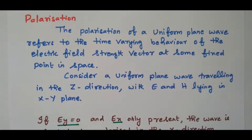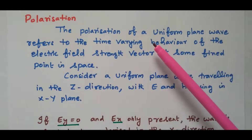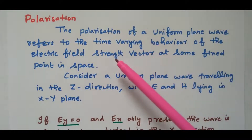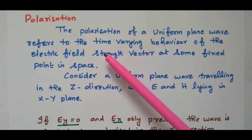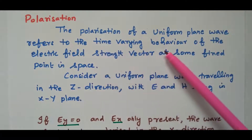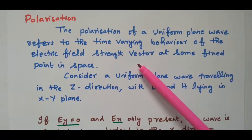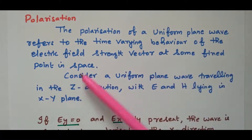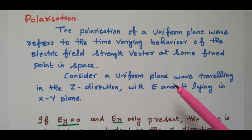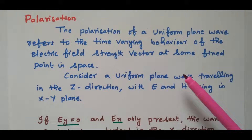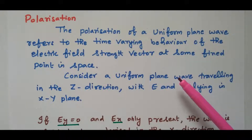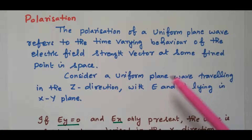Welcome viewers. In this video we will see the polarization. The polarization is nothing but the uniform plane wave. The polarization of the uniform plane wave refers to the time-varying behavior of the electric field strength vector at some fixed point in space — how the wave behaves with time, that is nothing but polarization.